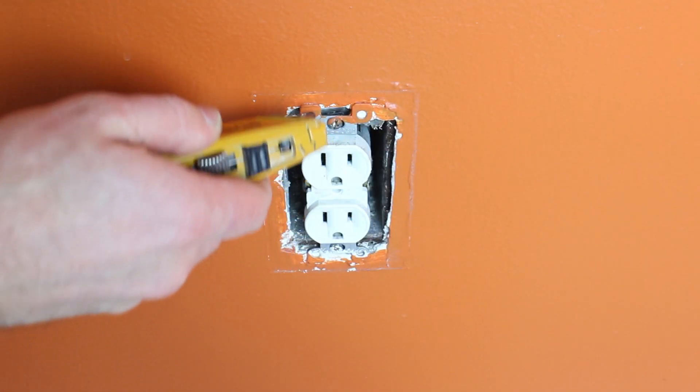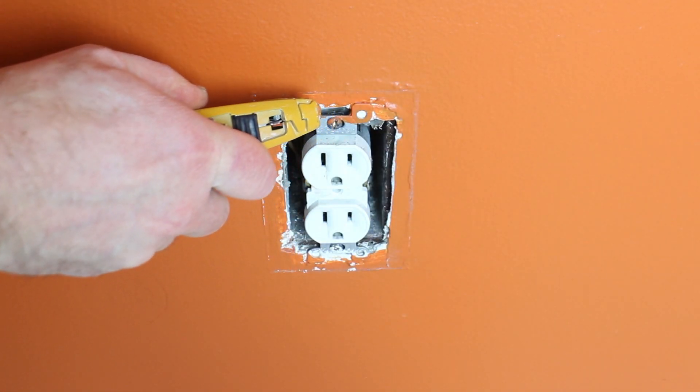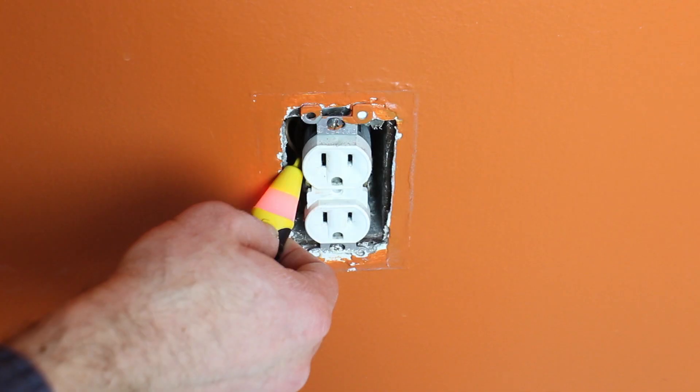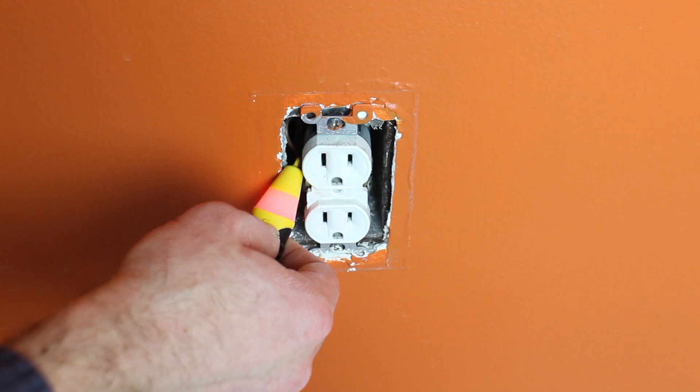Now if you have an outlet that has the tabs painted over, you can score the tabs with a utility knife. That way the outlet will not tear the paint off the wall.